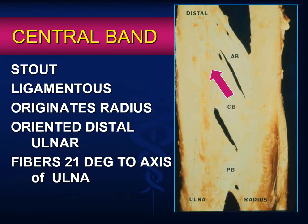The central band is the widest and thickest ligament of the complex. Its center originates from approximately two-thirds of the radial length from the radial styloid and inserts at approximately one-third of the ulnar length from the ulnar styloid. The fibers run obliquely from the proximal radius to the distal ulna at a 21-degree orientation to the long axis of the forearm. The central band primarily attaches on the volar aspect of the apex of the radius and on the dorsal aspect of the ulna.